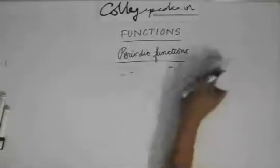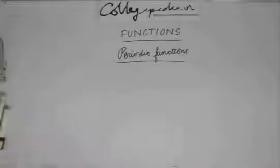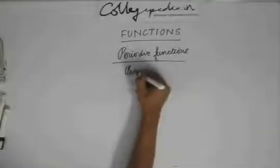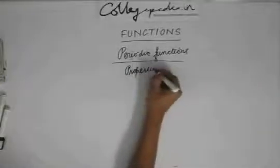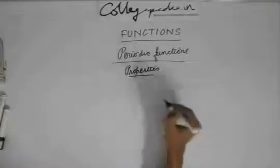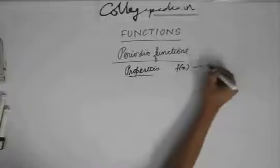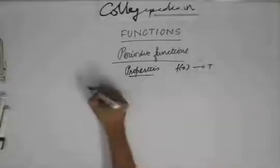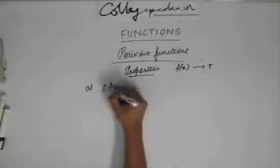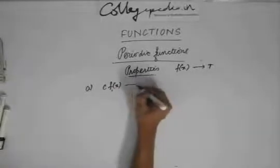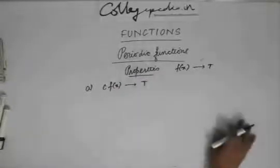We have seen two examples of how to find the period of a function. Now let's move on to some properties of periodic functions. Let's say f(x) is a periodic function with period t. The first property is: if f(x) is a periodic function with period t, then c·f(x) is also a periodic function with period t.